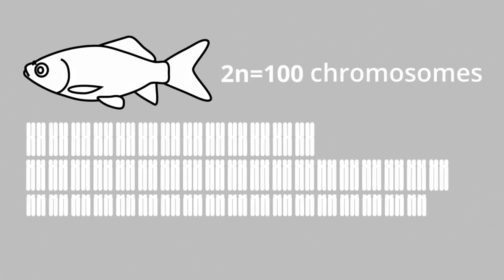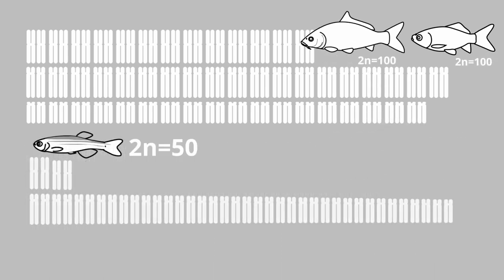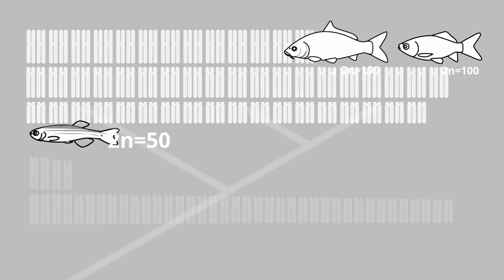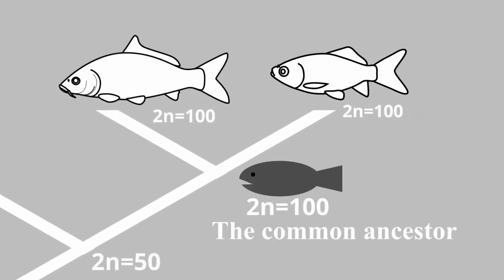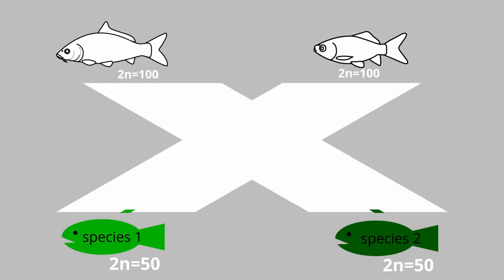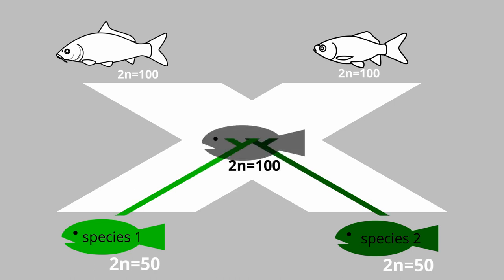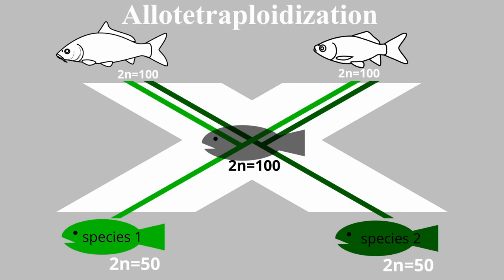Carassius species have 100 chromosomes in diploid cells, and common carp also have 100 chromosomes in diploid cells. However, zebrafish have only 50 chromosomes. This indicates that the chromosome number doubled in the common ancestor of goldfish and common carp. This type of change in chromosome number is called polyploidization. Specifically, a doubling of chromosomes is called tetraploidization. Recent genome sequencing analyses have revealed that tetraploidization occurred in the common ancestor of goldfish and common carp through species hybridization, a process called allotetraploidization.